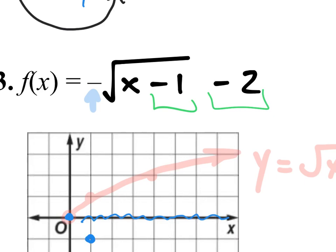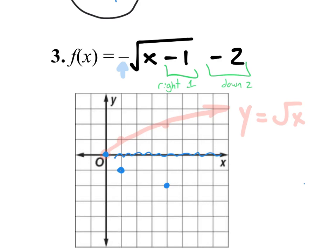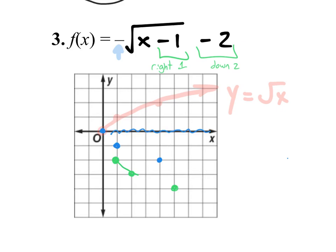So this minus 1 makes you want to go to the left. But remember, h values are always opposite. So I'm going to go to the right one. And then this one tells me to go down 2. So what I'm going to do is I'm going to take each of those blue points and go right 1, down 2. Take this next one, right 1, down 2. Take this final one, right 1, down 2. And that allows us to draw out our actual equation that we wanted, which is f(x) is equal to negative square root of x minus 1 minus 2.